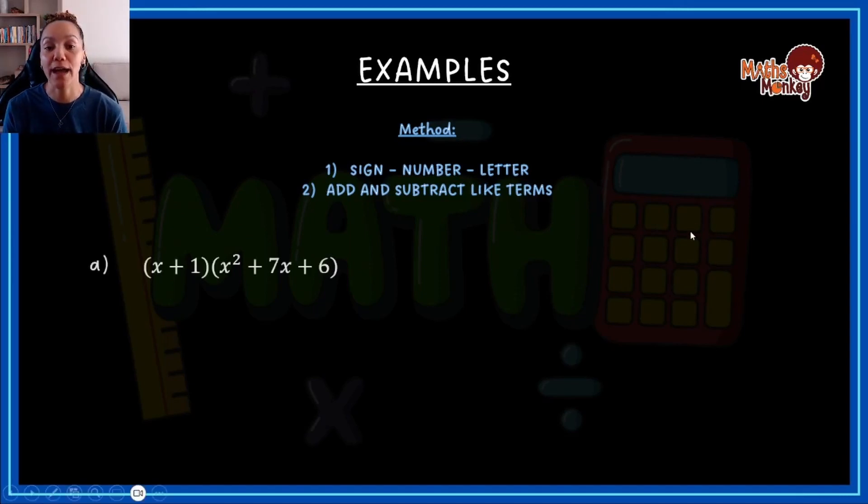Let's look at the first example. So we know this is a binomial times trinomial, and in an exam, this question will say simplify. So what you will do is you will start off with the first term in the binomial bracket, the x, and you will multiply this x by every single term using the sign number letter method.